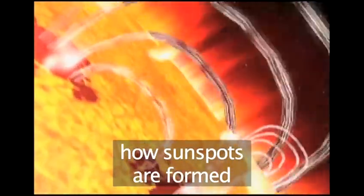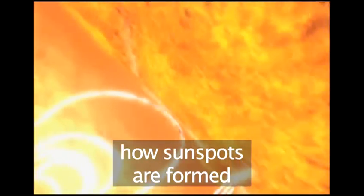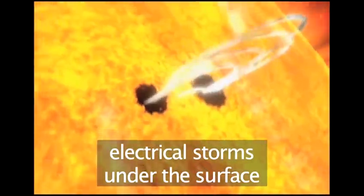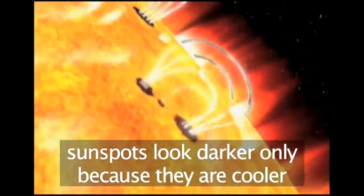But the surface of the sun is not stable. There are constant changes taking place. The most noticeable are sunspots. These are slightly cooler areas of the sun caused by electrical storms bursting up from the center and exploding on the surface.